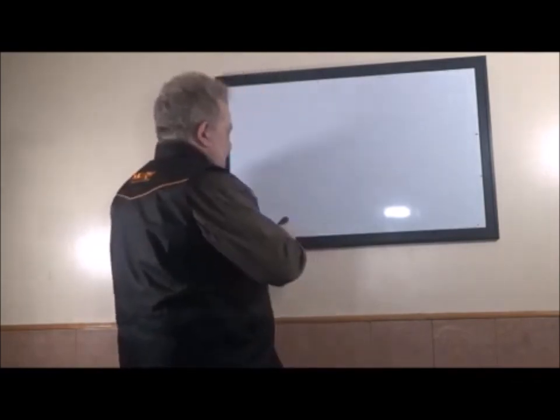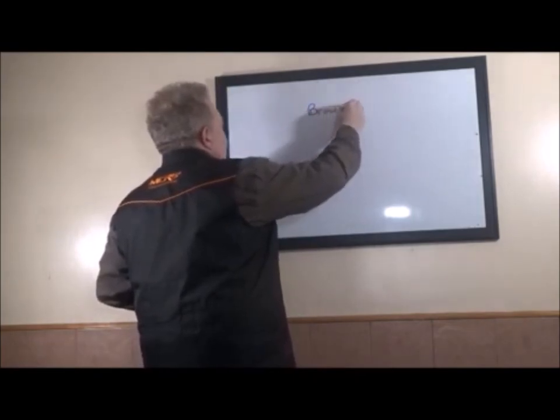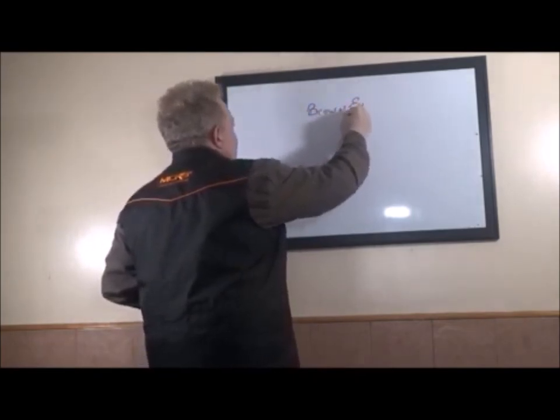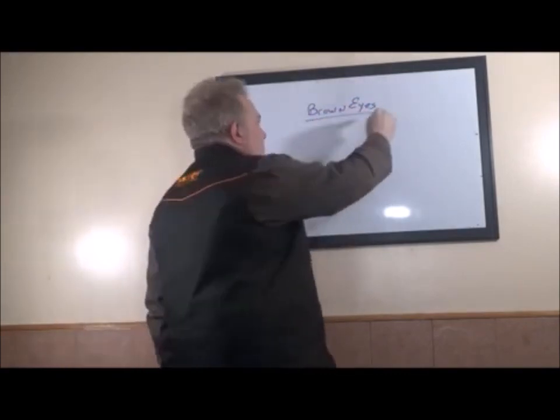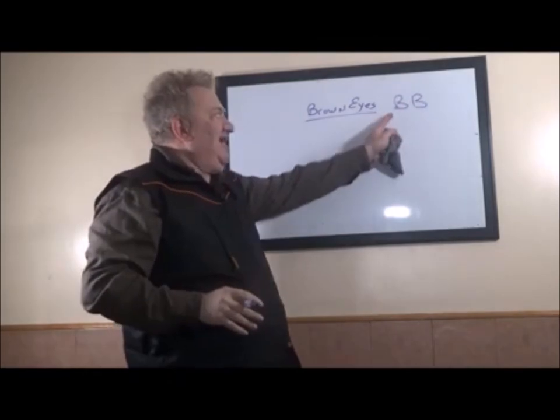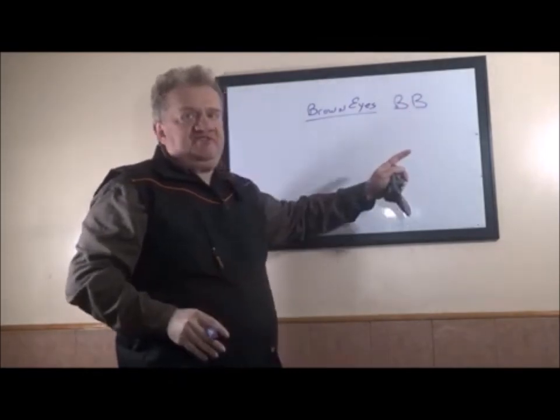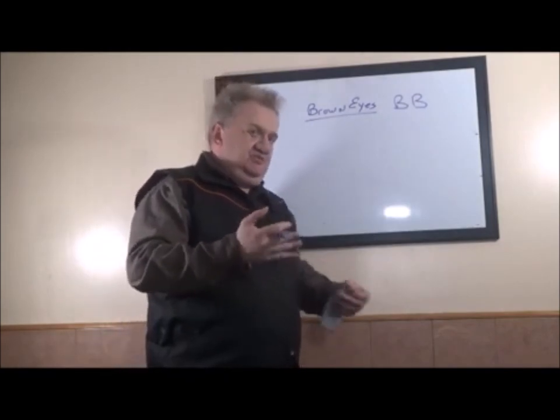Let's say you have two human beings and you have a parent with brown eyes. Brown eyes we are going to write as capital BB. Now, dominant genes are written with capital letters and recessive genes are written with lowercase letters. That's how the notation works.